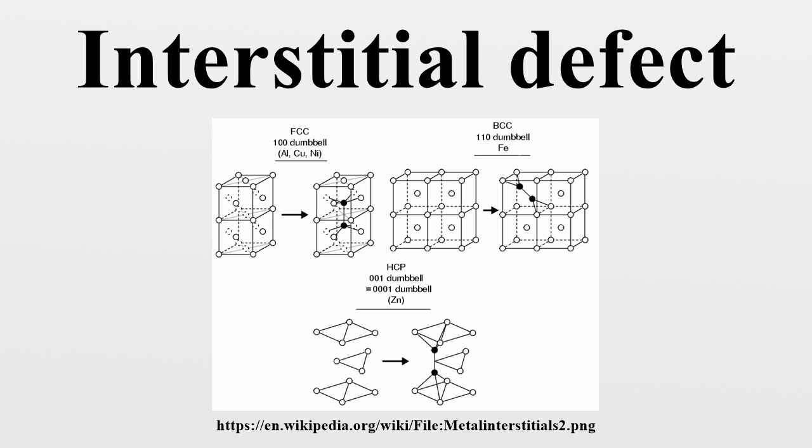Small impurity interstitial atoms are usually on true off-lattice sites between the lattice atoms. Such sites can be characterized by the symmetry of the interstitial atom position with respect to its nearest lattice atoms. For instance, an impurity atom I with four nearest lattice atom A neighbors in a FCC lattice is in a tetrahedral symmetry position, and thus can be called the tetrahedral interstitial.